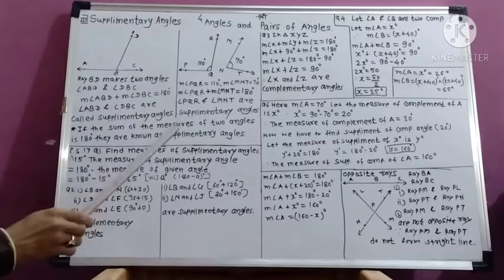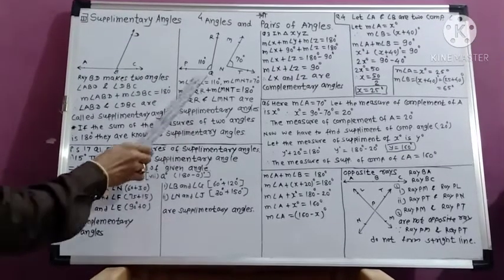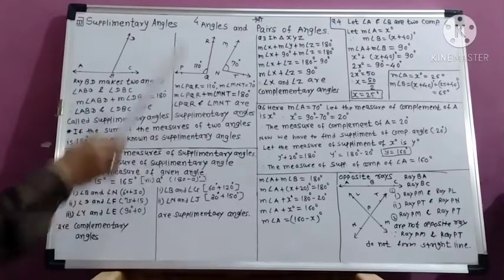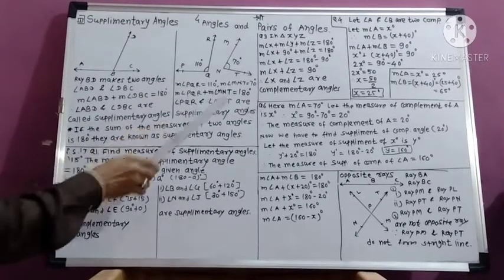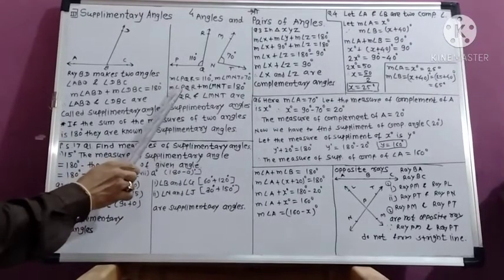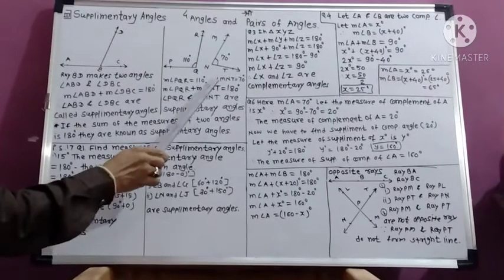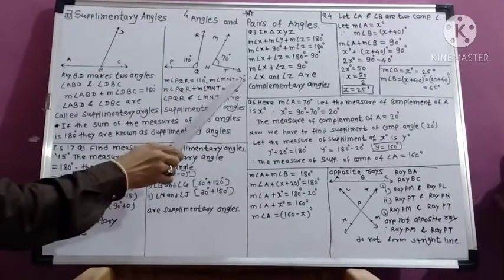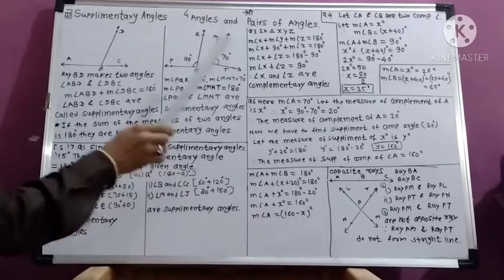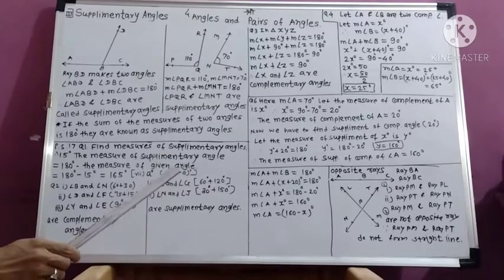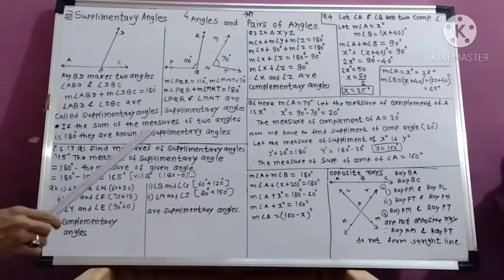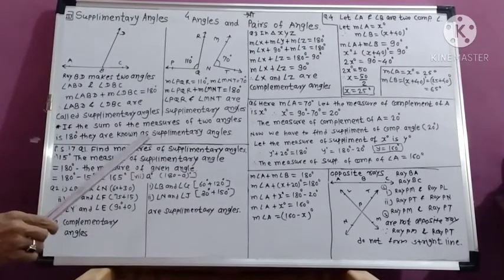In the second example, angle PQR measures 110 degrees and angle MT measures 70 degrees. If we take the sum: 110 degrees plus 70 degrees equals 180 degrees. Therefore they are called supplementary angles.